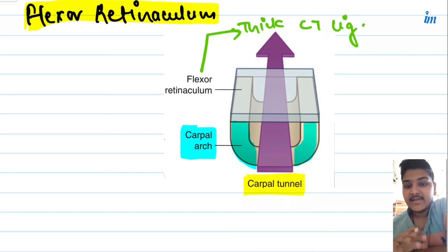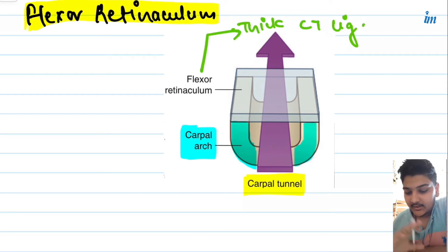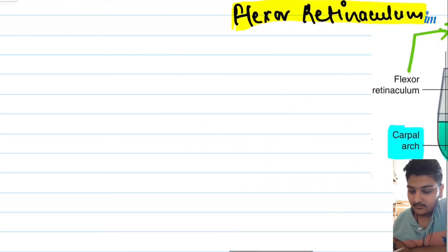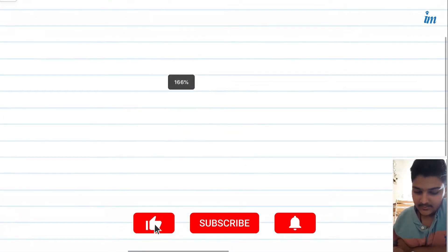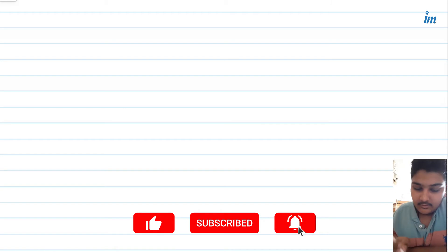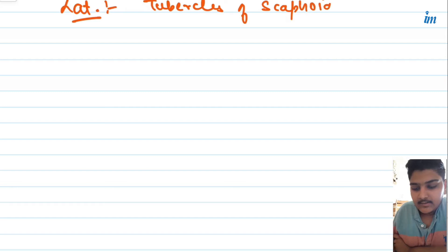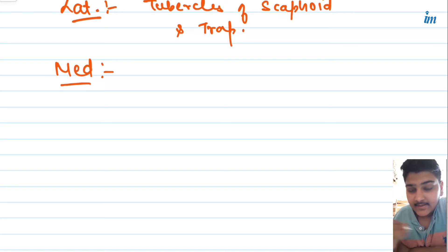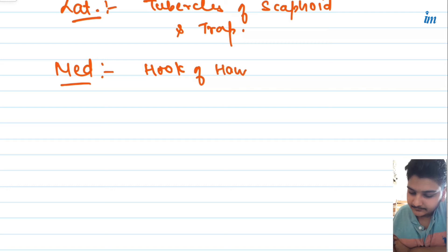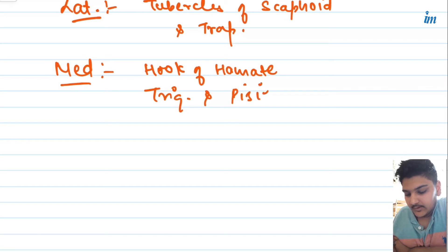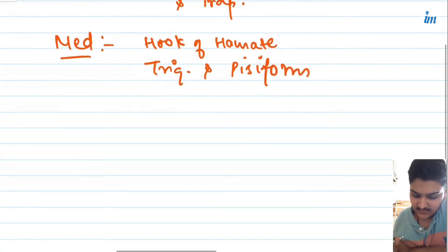So when we talk about structures present deep to the flexor retinaculum, we are actually referring to structures inside the carpal tunnel. The flexor retinaculum extends laterally from the tubercles of the scaphoid and trapezium, and on the medial side it attaches to the hook of hamate, triquetrum, and pisiform.